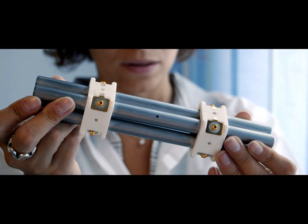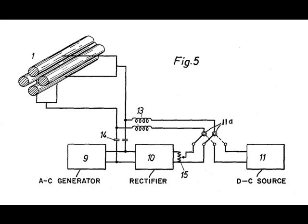Other ions have unstable trajectories and will collide with the rods. This permits the selection of an ion with a particular m/z, or allows the operator to scan for a range of m/z values by continuously varying the applied voltage. Mathematically, this can be modeled with the help of the Hill differential equation.